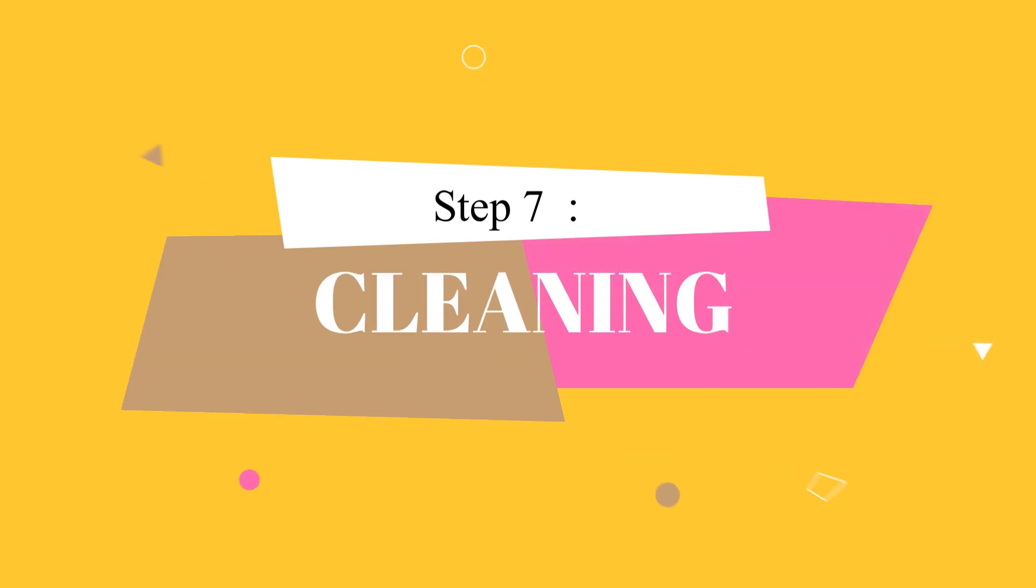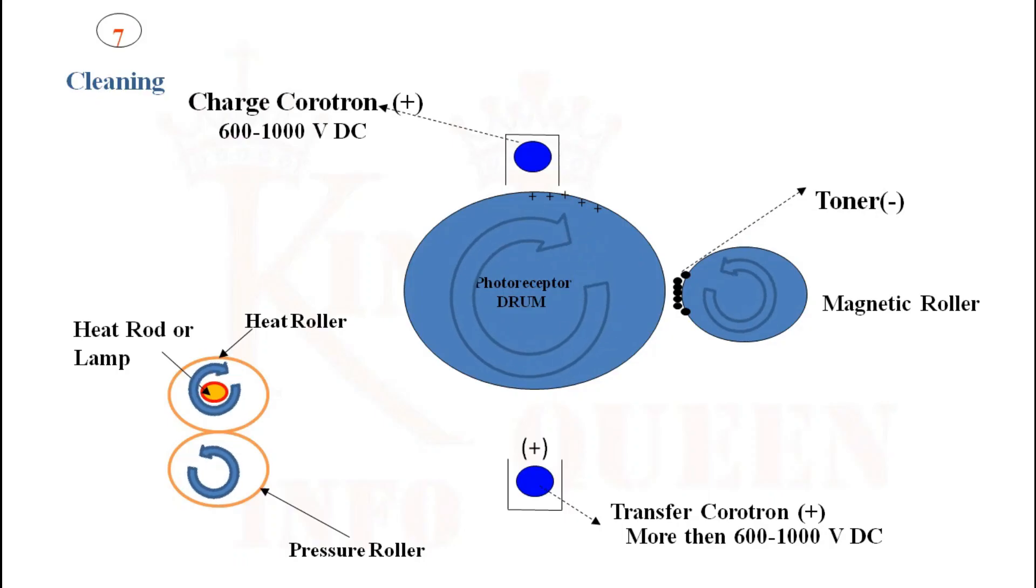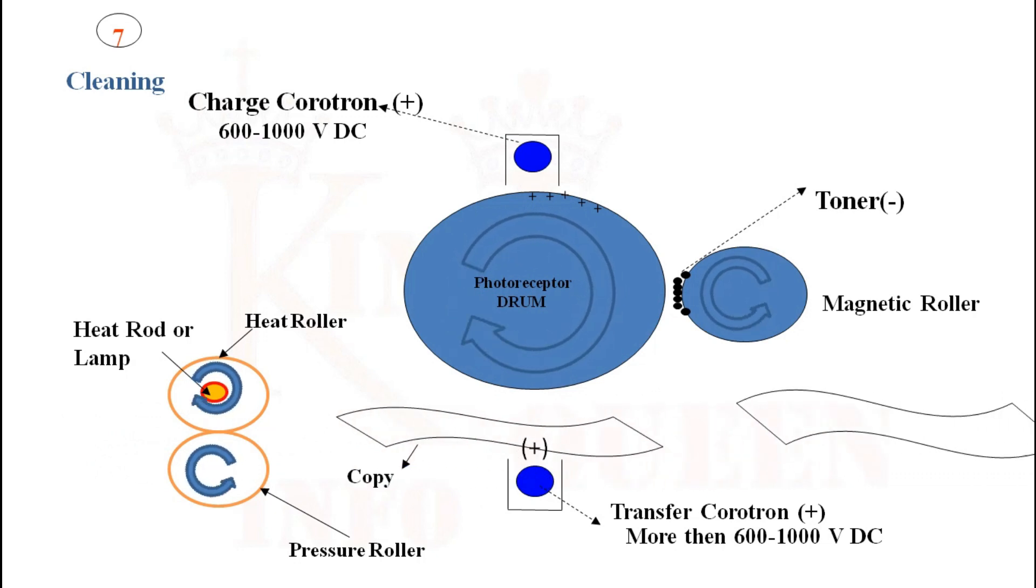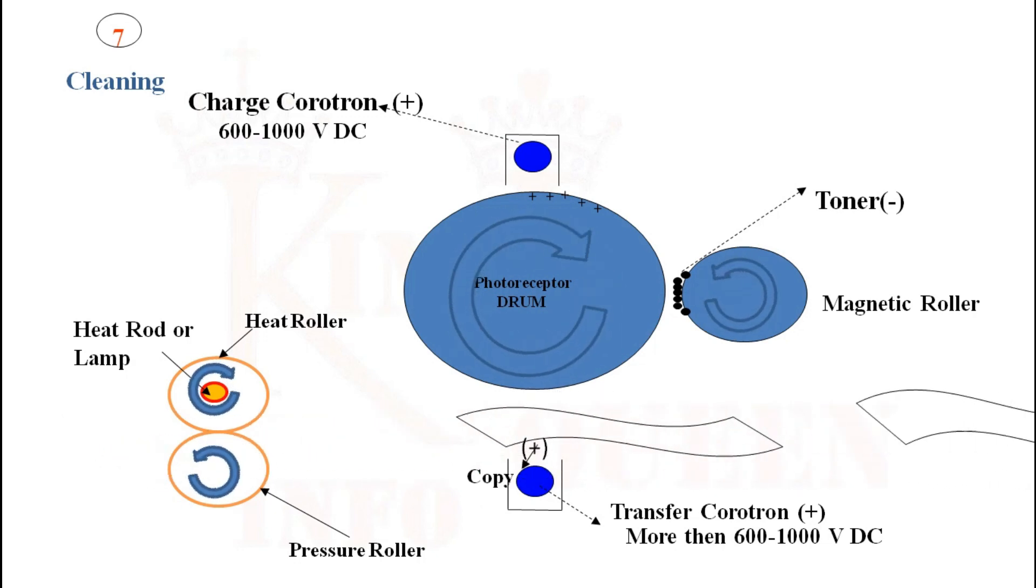Step 7: Cleaning. After the transfer function, some charge and toner remains on the photoreceptor, which is called residual toner or residual charge. Before a new cycle starts, the photoreceptor is to be discharged totally and residual toner is to be removed completely so that we do not get previous copy impression on the second copy.